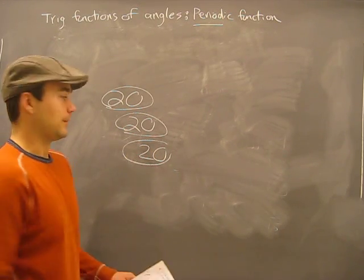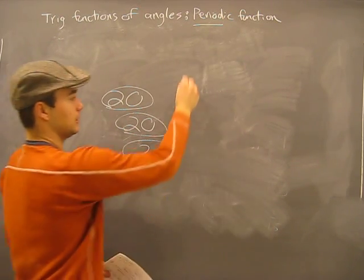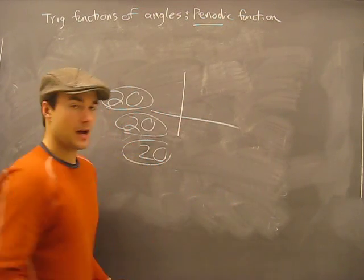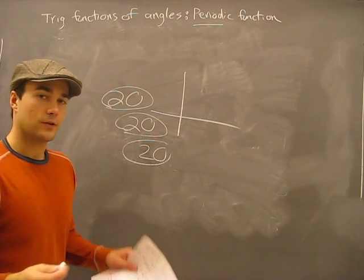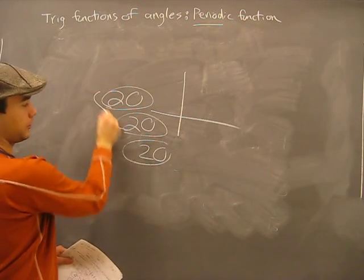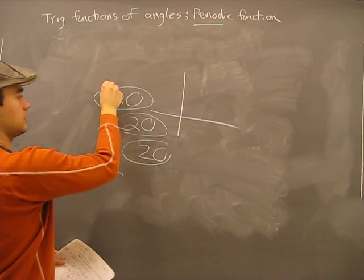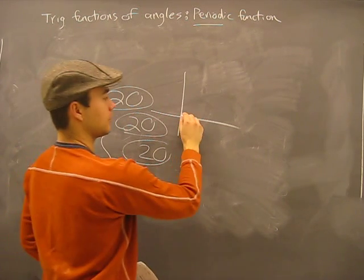Now, on a graph, I mean, not on a graph this, but the same kind of thing happens on a graph. When something repeats itself, a section of the graph will be called the period. This whole thing isn't called the period, just one thing is called the period.